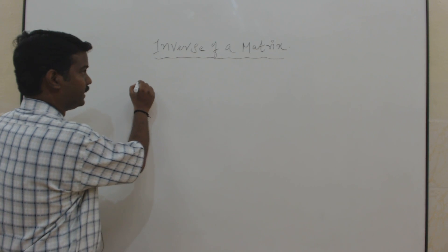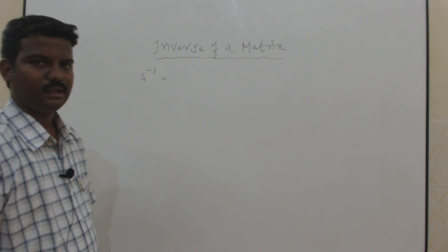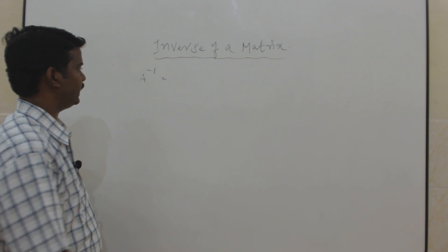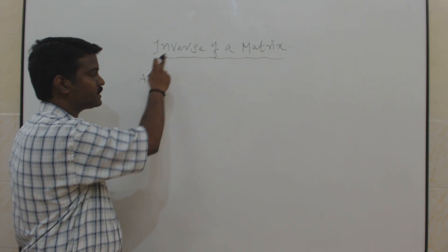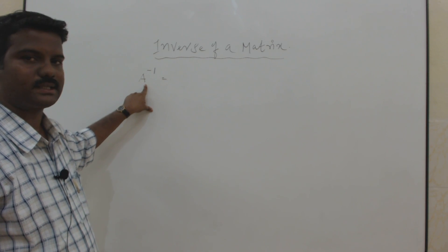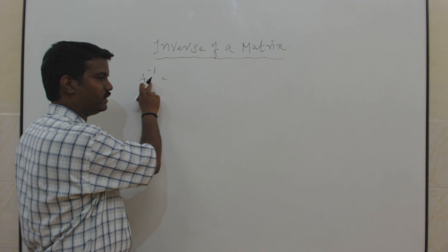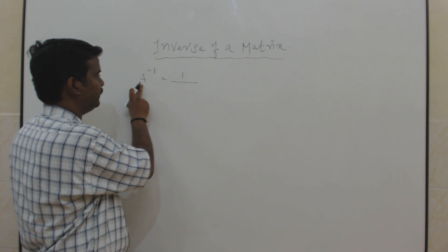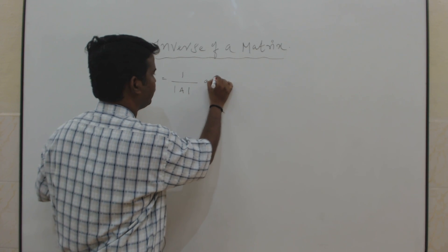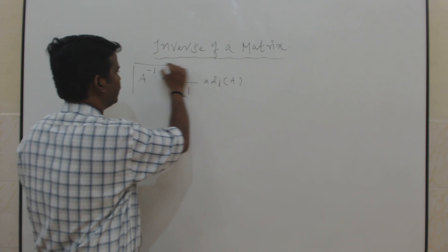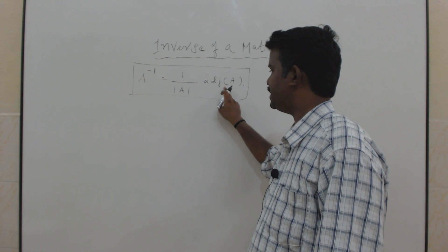Now we define the inverse of a matrix like this. Let capital A be a square matrix of order n — we can find the inverse of a square matrix only. A inverse is defined as 1 divided by determinant of A, multiplied by adjoint of A. So this is the formula for finding the inverse of a matrix.